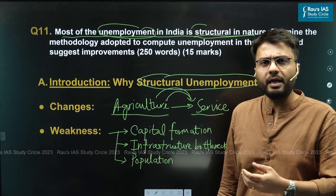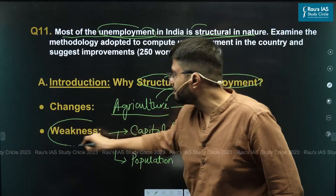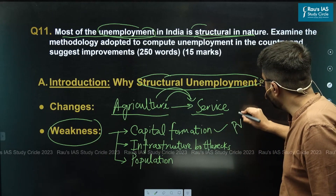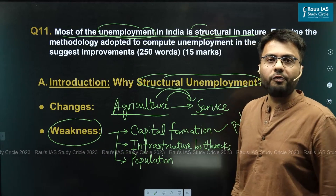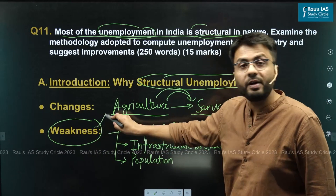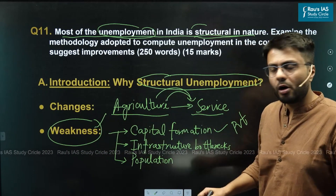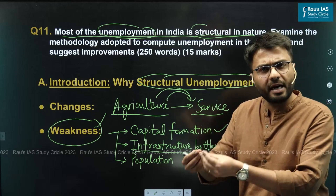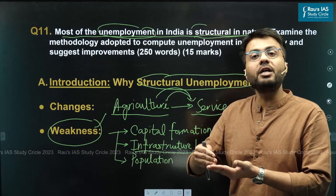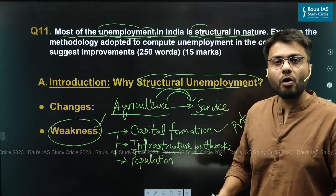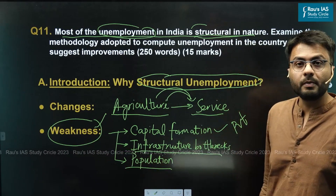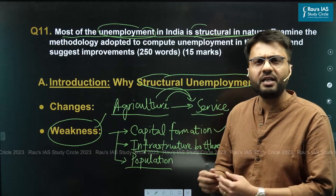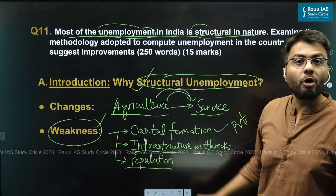The Indian economy has also witnessed structural weaknesses. First, there is a lack of capital formation, mostly by the private sector, which leads to structural weaknesses. Further, the Indian economy faces infrastructural bottlenecks in both current infrastructure utilization and creation of new infrastructure. India also witnesses high population growth, and when this population is not absorbed into productive agricultural or manufacturing sectors, it leads to structural unemployment.